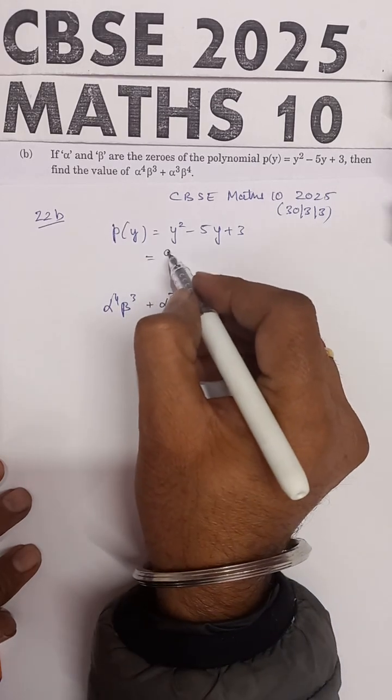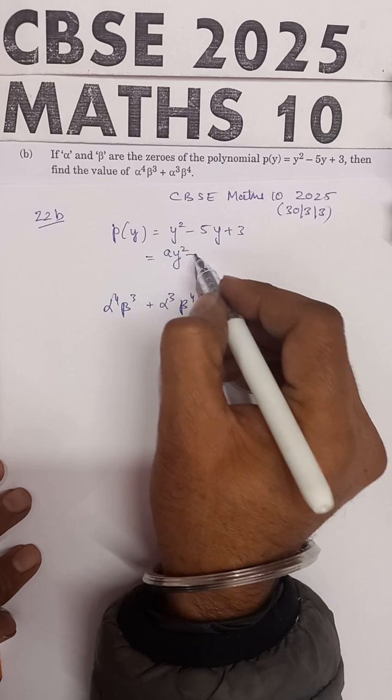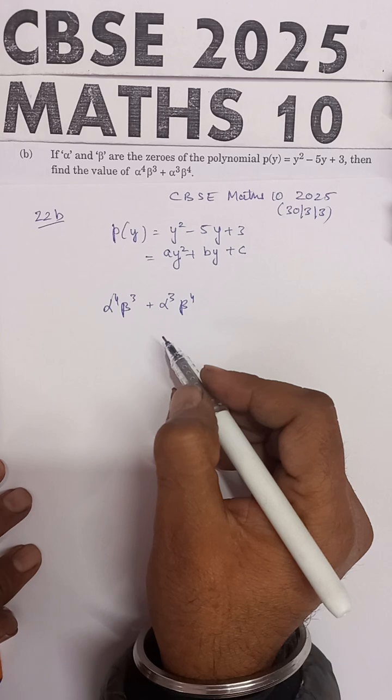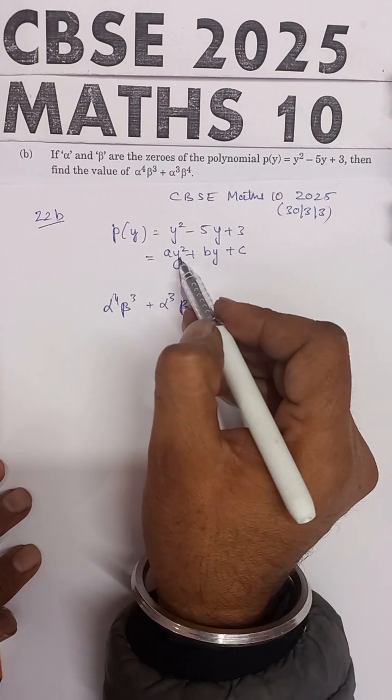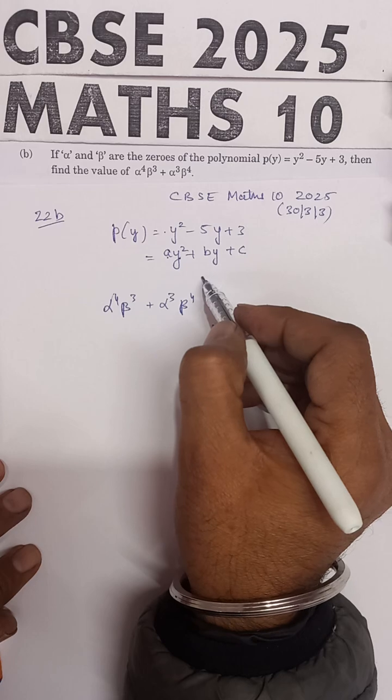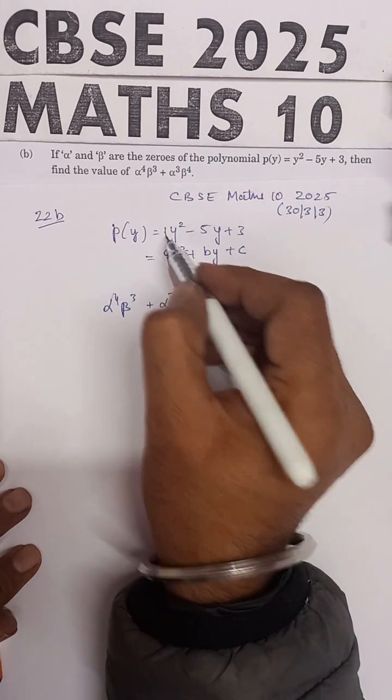The standard form is AY² + BY + C. This is the standard form of the polynomial. The coefficient of Y² is written as A, so the value of A is 1.